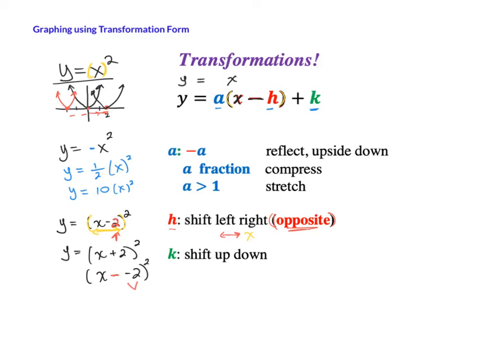The last shift to talk about is k. This one's actually the easiest one because it's a straight shift. Since it is outside the parentheses — for example, y equals x squared plus 2 — it does not go opposite. This is actually connected to y. Since it is outside the parentheses it's not with x, it is with y. Only things inside the parentheses are with x. Since it's outside, that means it shifts along the y-axis — up and down. So x squared plus 2 would take this parabola and shift it up 2.